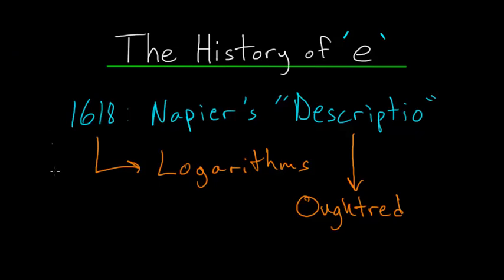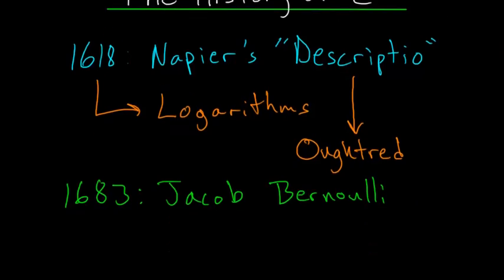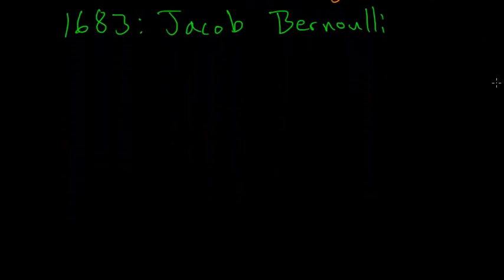It wasn't until the year 1683 with the mathematician Jacob Bernoulli that E was explicitly written down and calculated. And the way Bernoulli found E was through studying compound interest. So we need to take a better look at compound interest.